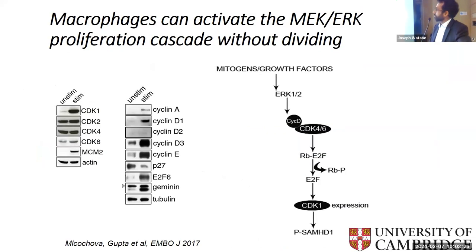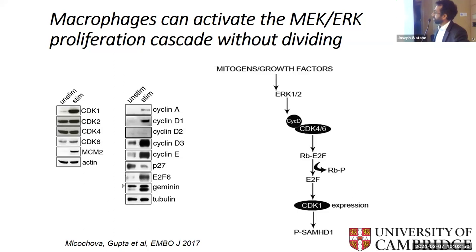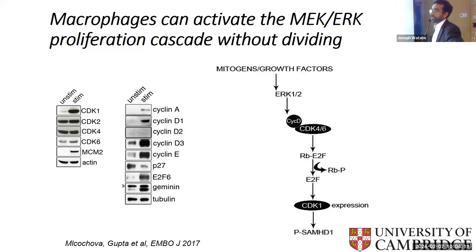Western blots show upregulation of cyclins and CDKs in stimulated macrophages, consistent with activation of the canonical mitogen pathway involving MEK-ERK, cyclin D associated with CDK4, leading to regulation of transcription factors and then expression of various cyclins including CDK1. Of note, CDK1 was already described as the protein which regulates SAMHD1. So changing CDK1 levels — upregulating CDK — leads to phosphorylation of SAMHD1, and when you phosphorylate SAMHD1 you essentially deactivate it. In other words, it allows high DNTP levels to accumulate in the cell so that the cell can divide. This is all part of the proliferation pathway.